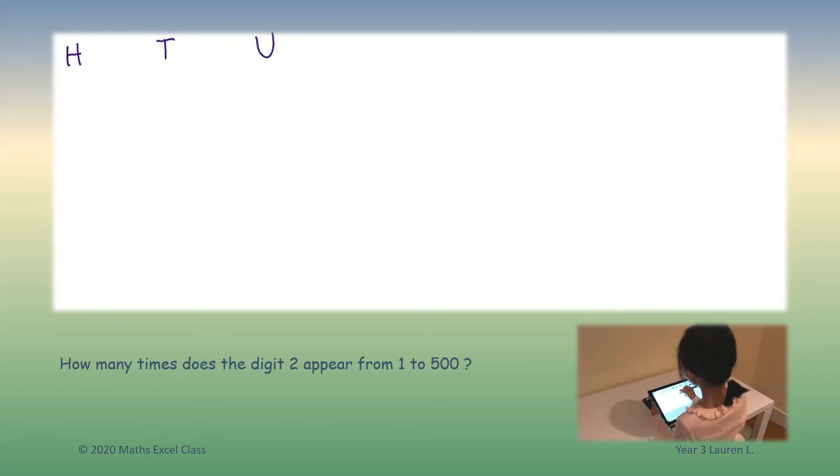In the units, from 1 to 100, 2, 12, etc., 92, there are 10 numbers. But hey, again, let's remember that I said 1 to 500, so we need to multiply that by 5, which is 50 numbers. So there are 50 numbers.